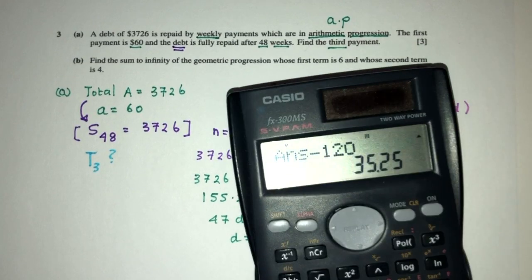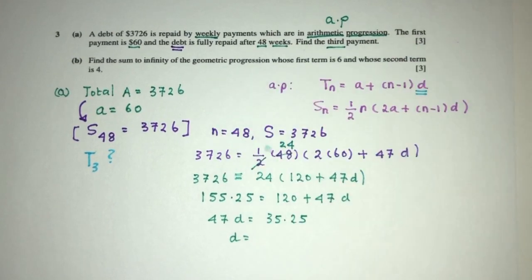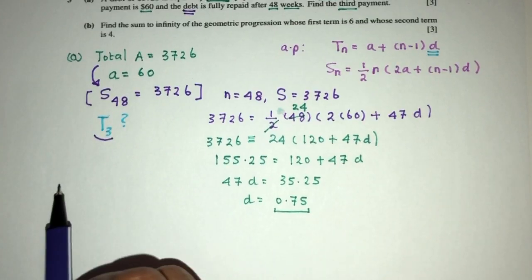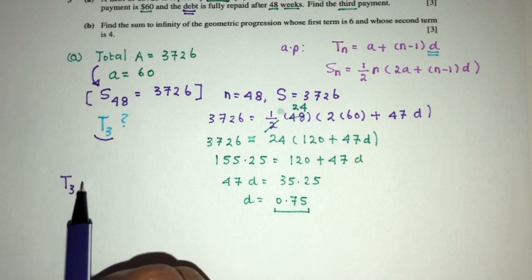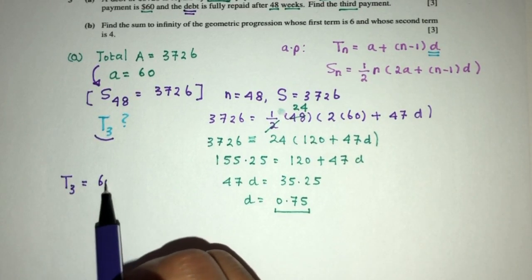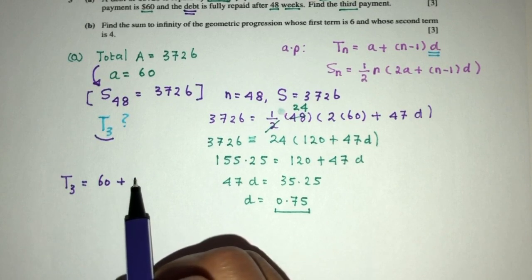So D will be what? This divided by 47 will give you 0.75. Okay, this will be D. It will be 0.75. So now we have the value of D. We can use that to go find the value of the third term. So third term, according to the question, should be what? I mean, to the equation will be A.